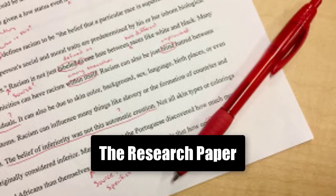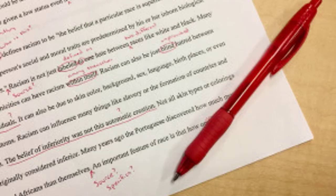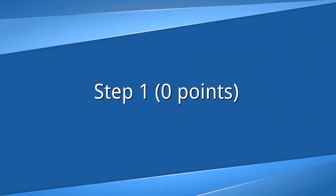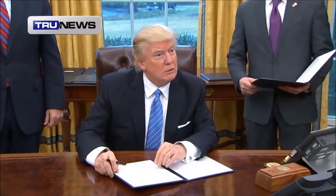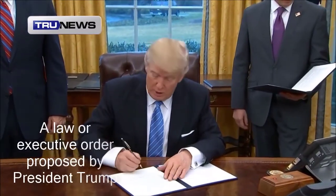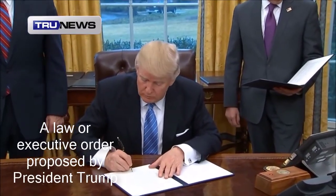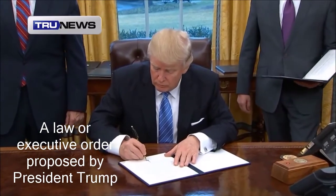The research paper consists of three different parts. The first step has no points associated with it. You merely select a topic and get my approval. For your paper, you'll be writing about a specific law or executive order that has been proposed by President Donald Trump.